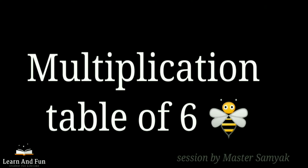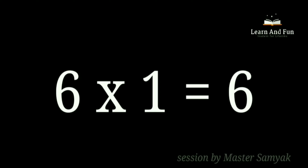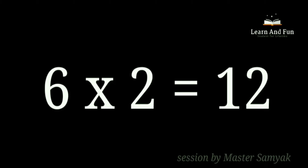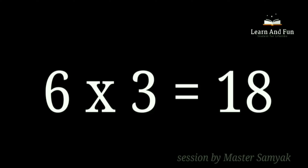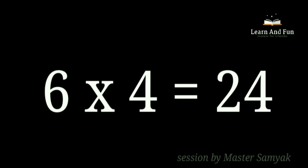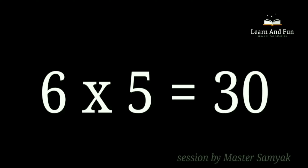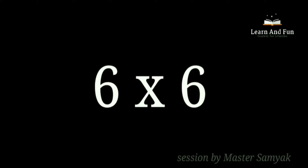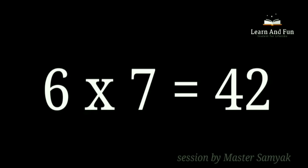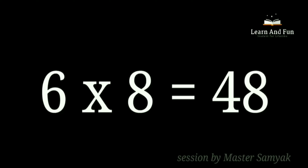Multiplication Table of 6. 6 ones are 6. 6 twos are 12. 6 threes are 18. 6 fours are 24. 6 fives are 30. 6 sixes are 36. 6 sevens are 42. 6 eights are 48. 6 nines are 54. 6 tens are 60.